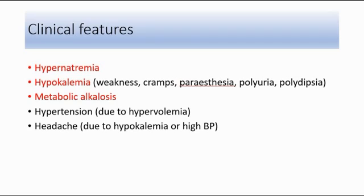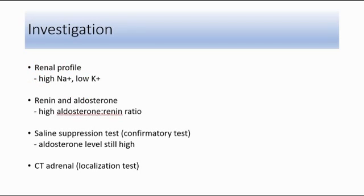For investigation of Conn's syndrome, we can do a renal profile, where we expect to see high sodium level and low potassium level. The second investigation is renin and aldosterone level, where we expect a high aldosterone-to-renin ratio in Conn's syndrome. To confirm the diagnosis, we do a saline suppression test, where the patient is given a saline infusion into a vein. The normal response will be that aldosterone release is suppressed because renin is decreased. If after the saline suppression test the aldosterone level is still high, it suggests Conn's syndrome. Once confirmed, we do a CT scan of the adrenal glands to localize the tumor.